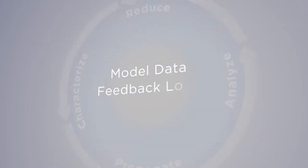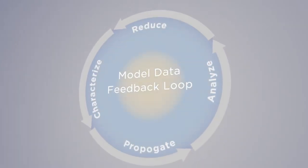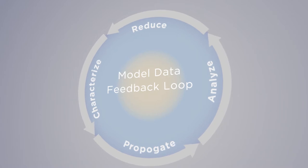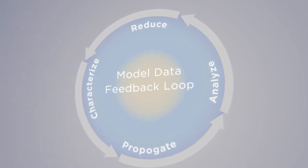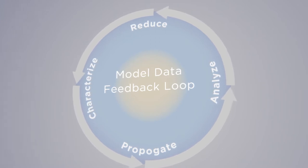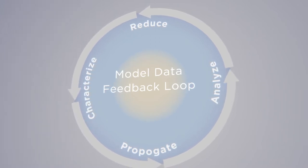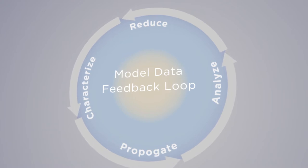One of the concepts I'd like to emphasize here is what I call the model-data feedback loop — the idea that we might start from observations, use them to calibrate a model, propagate that uncertainty into a prediction, and then analyze those uncertainties in terms of breaking them down into the component parts. So I might have a model with multiple parameters and I want to know the contribution of different parameters and processes to my overall prediction.